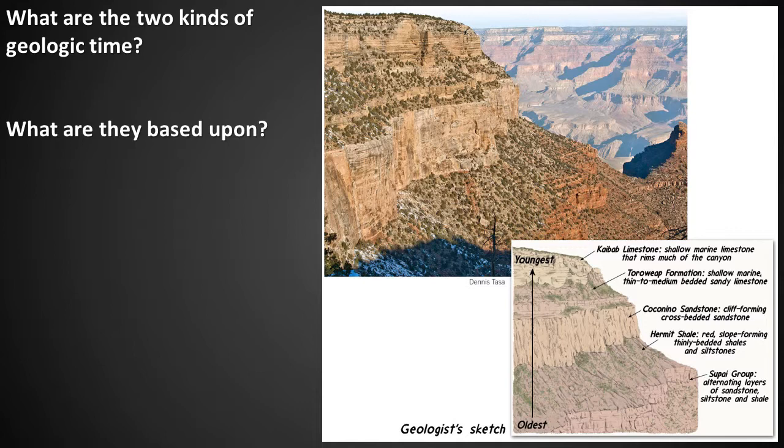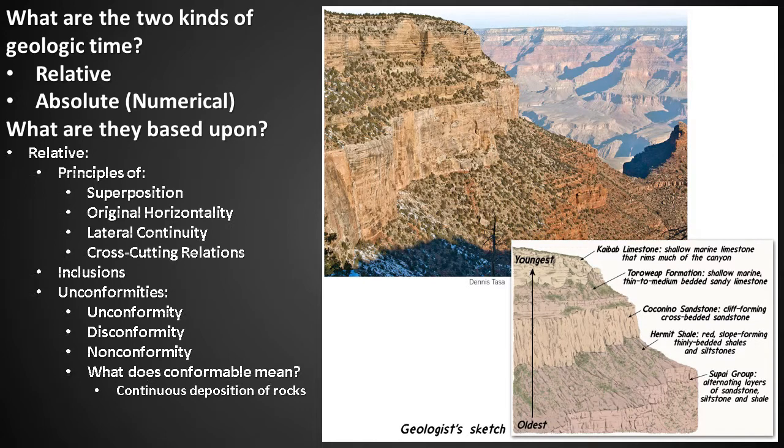What are the two kinds of geologic time? Yes — relative and absolute, or numerical. Based on your reading material, what is relative time based upon? Relative time is based upon the principles of superposition, original horizontality, lateral continuity, and cross-cutting relations. It is also based on inclusions and on unconformities, which include the angular unconformity, the disconformity, and the nonconformity.